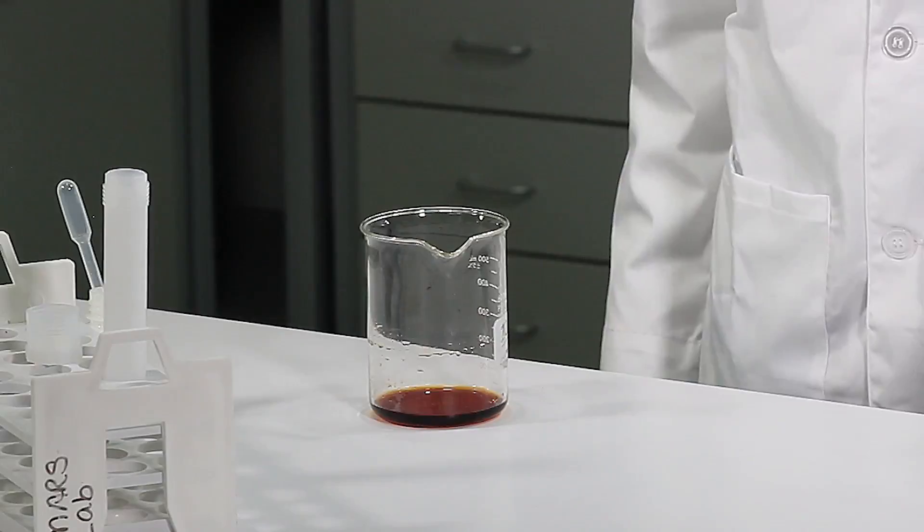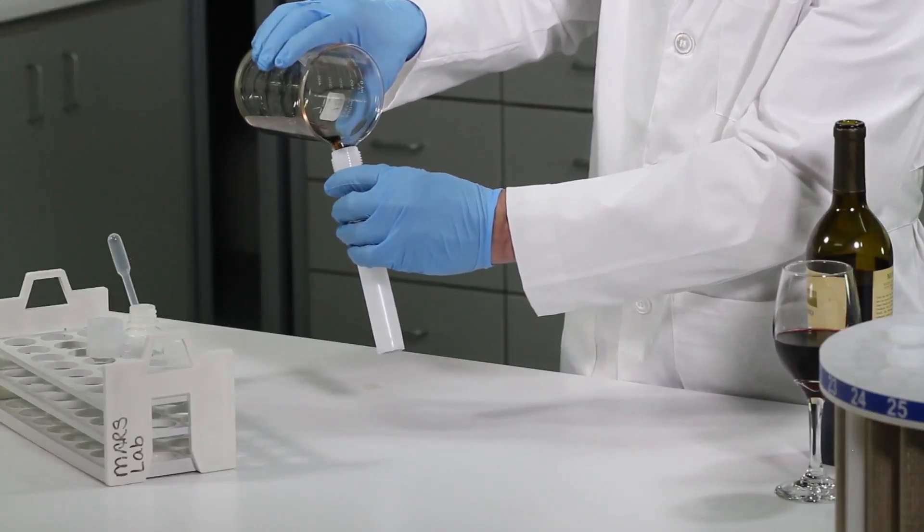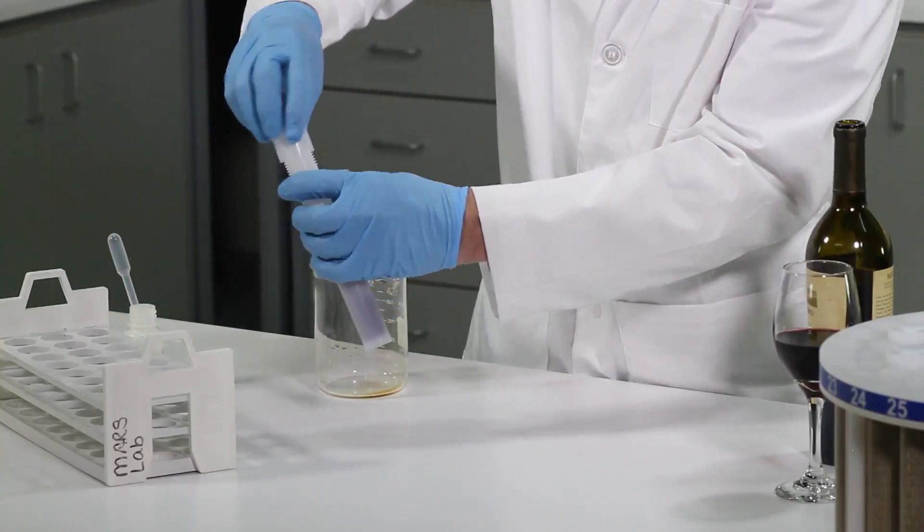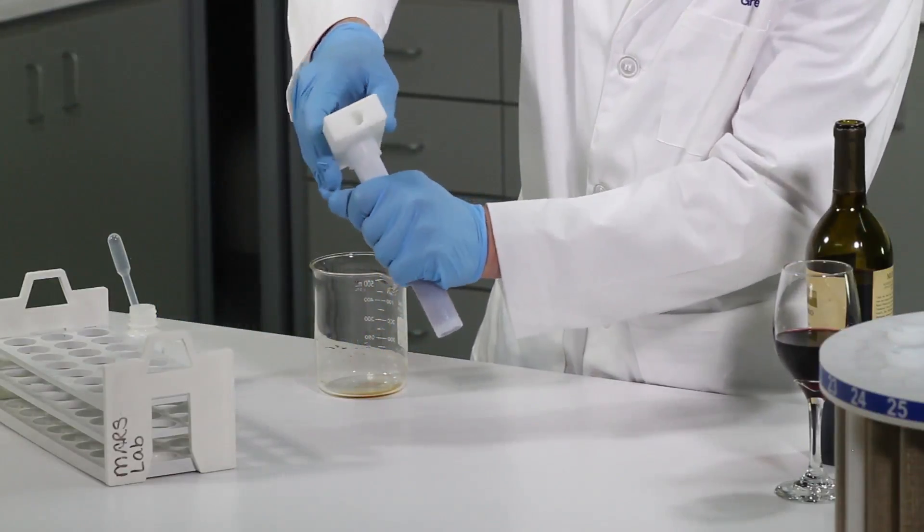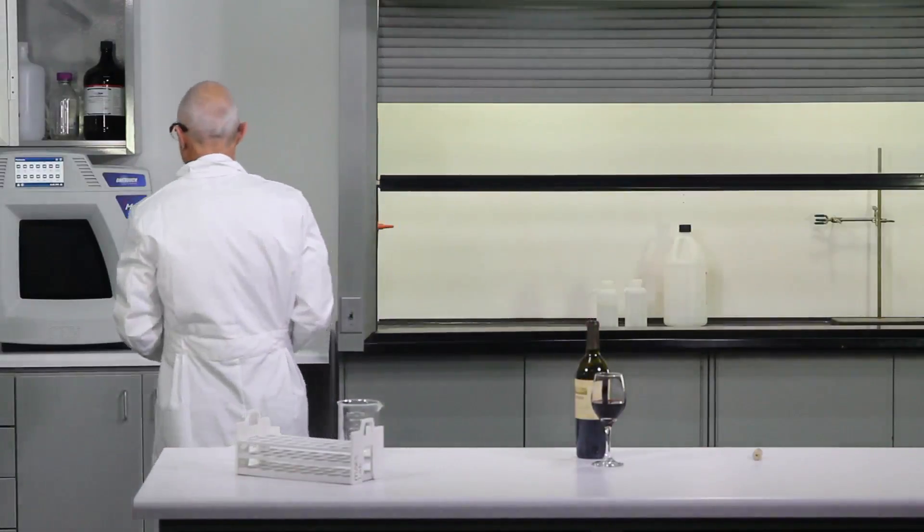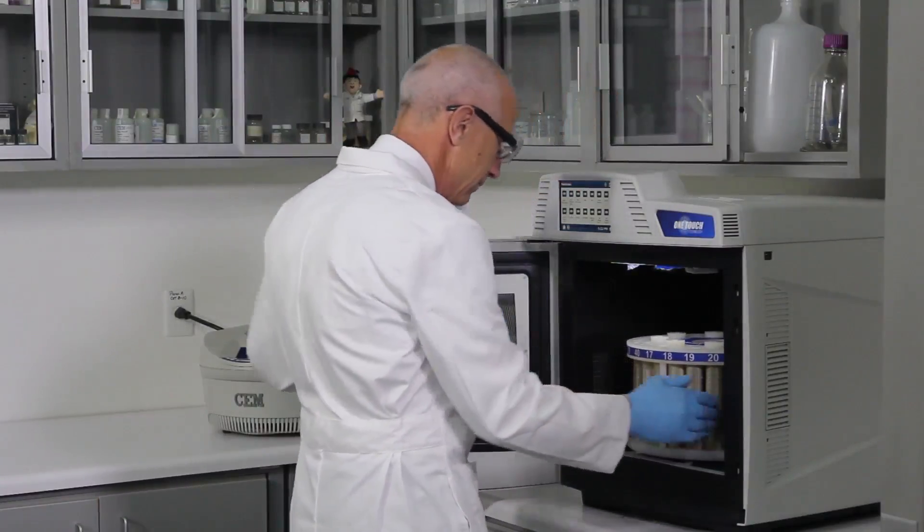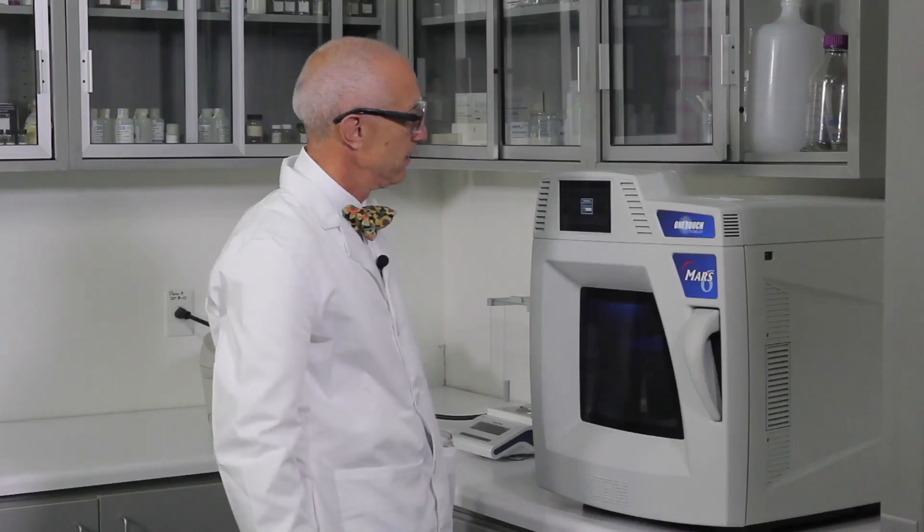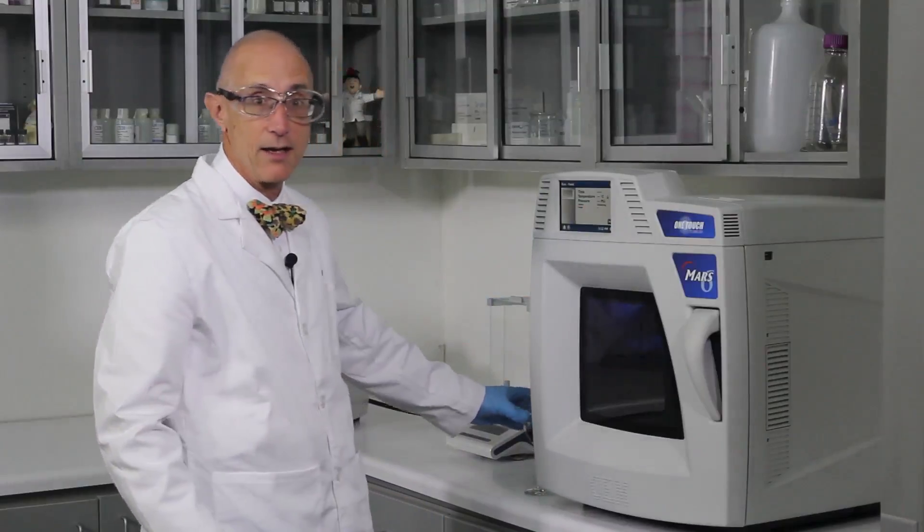Now that the pre-digestion has subsided, we can seal the vessel and put it in the microwave. Into the turntable, turntable over to the microwave unit. We'll load our samples into the cavity, close the door, select our method. It's loading. Then we're going to press start. Keep our product near at hand. Might need that.